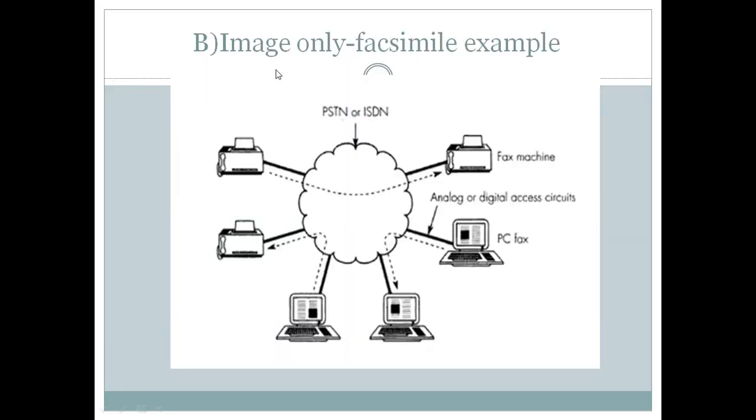And next type of interpersonal communications is using image only, that is using the facsimile example. Just it is an example where we use only image. As you know, the facsimile is nothing but the fax. In general it is called as fax. We have a fax machine and every fax machine has its own number just like the telephones that we have. So you will make a certain call similar to the telephone, but instead of speaking on the fax machine we will be sending some images that will be scanned from one end and it will be printed on the other end. That is what this is, a simple block diagram of a facsimile example.